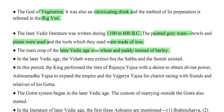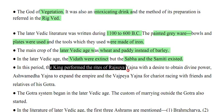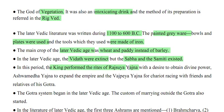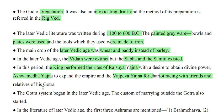In the later Vedic age, the Vidat was extinct but the Sabha and Samiti existed. The king performed the rites of Rajasui Yajna to obtain divine power, Ashwamed Yajna to expand the empire, and Vajpe Yajna for chariot racing with friends and relatives of his Gotra.